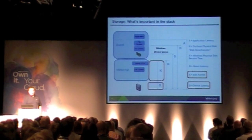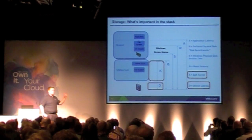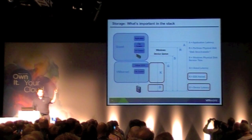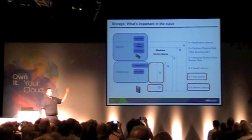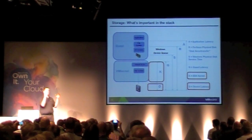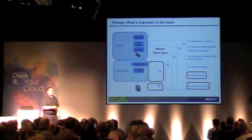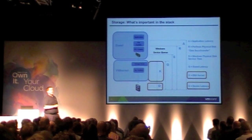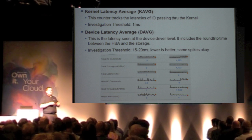Let's dive into the storage data. I want everyone to take away two counters for troubleshooting — the two most important. On the diagram they're designated K and D. K is your kernel average latency: the amount of time an IO takes to pass through the hypervisor. K average typically happens in tens of microseconds — bad K average means an ESX host problem, probably CPU contention. D is your device average latency: the time an IO takes leaving the ESX host to your storage array and back. A high D average indicates a transport or array problem. The tipping point for D average is about 10 to 15 milliseconds.